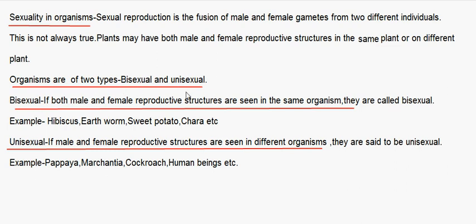If both male and female reproductive structures are seen in the same organism, they are called bisexual. For example, in hibiscus, earthworm, sweet potato, and carrot, you can see male and female reproductive structures in the same organism. If male and female reproductive structures are seen in different organisms, they are said to be unisexual.